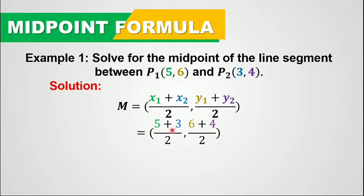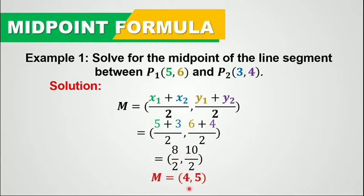So 5 plus 3 all over 2 is simply 8 over 2, and 6 plus 4 over 2 is 10 over 2. So 8 over 2 and 10 over 2, or simply 4 and 5 — 8 over 2 is 4 and 10 over 2 is 5. Therefore, the midpoint of the line segment has coordinates 4 and 5.